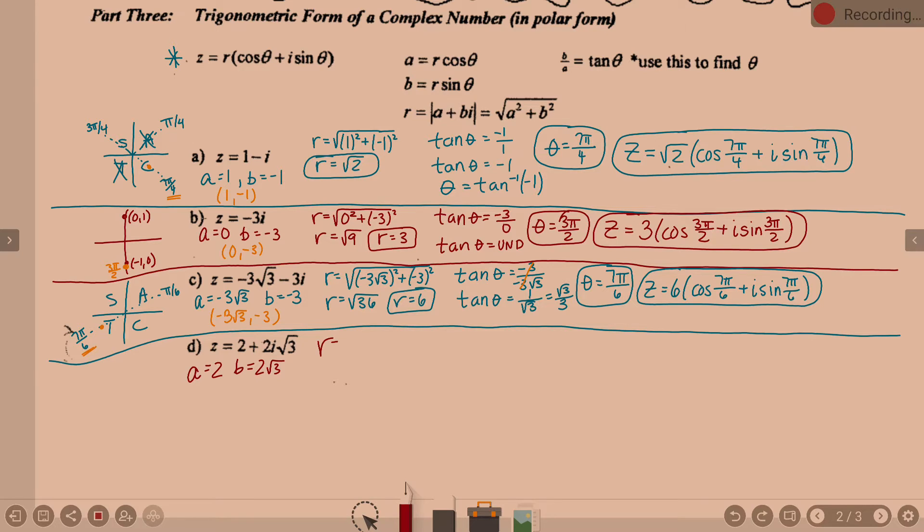R equals the square root of 2 squared plus 2 square root of 3 squared. If we clean that up, 2 squared is 4. Over here, 2 squared is 4, square root of 3 squared is 3. 4 times 3 is 12. So then we end up with 12 plus 4, which is 16. And so we find out that R is 4.